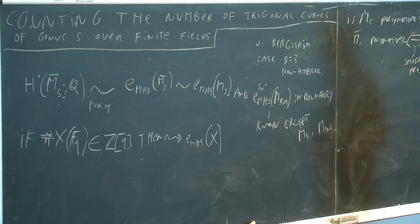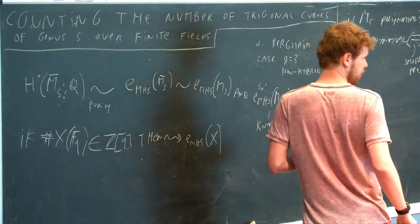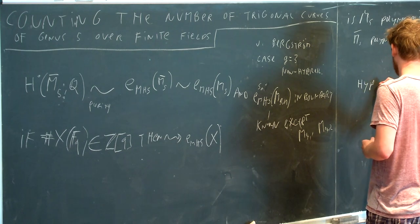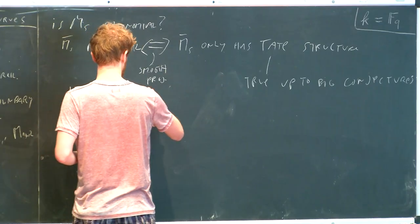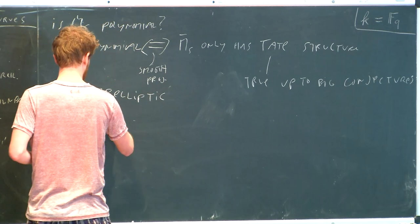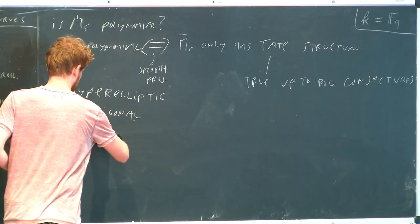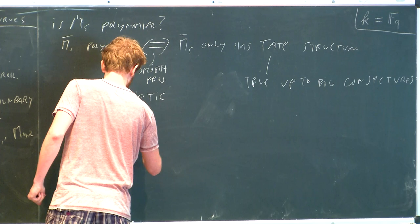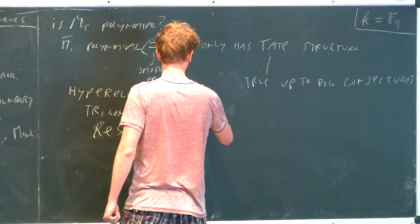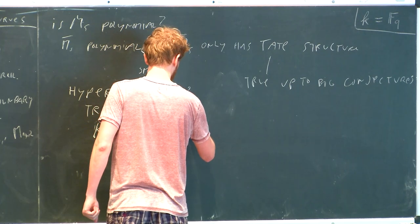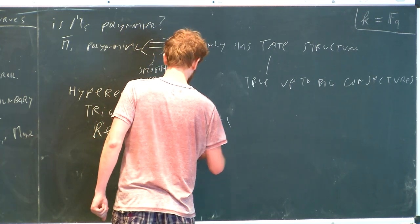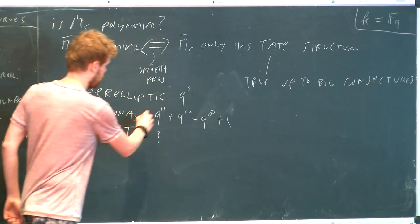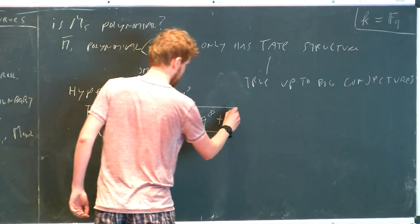So how do we try to count the number of points of M5? We can look at the gonality of the curves: we have hyperelliptic curves, trigonal curves, and the rest. There are q^9 hyperelliptic curves, and there are q^11 + q^10 − q^8 + 1 trigonal curves, and the rest is still unknown. I'm currently looking at this, and this is my result — which is the topic of this talk.